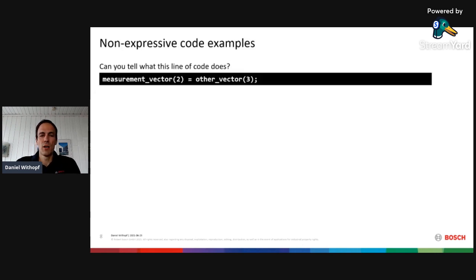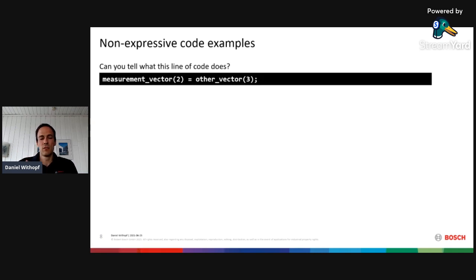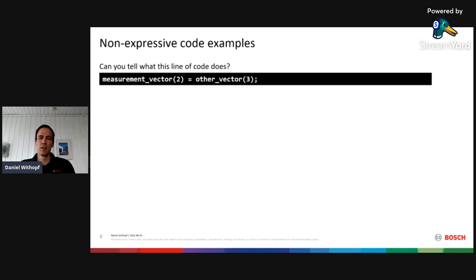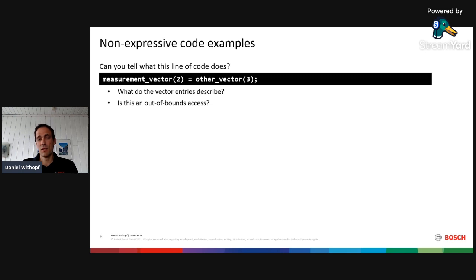Now I want to explain how I started the activities on this topic. When doing code reviews or reading other people's code, you often see code like this in linear algebra code — these are linear algebra vectors, not std vectors. Here we have an access to some vector at position 3 and we assign it to measurement vector at position 2. When I see code like this, I immediately have two questions. The first question is: what do the vector entries actually describe? There's no indication whatsoever what's at position 3 or position 2. Furthermore, this could also be an out-of-bounds access — which can be caught by static analysis or runtime assertion, but ideally I'd like a guarantee that it cannot be one.